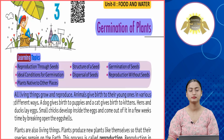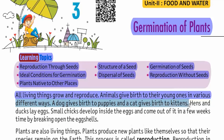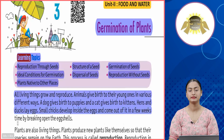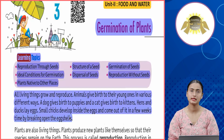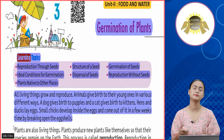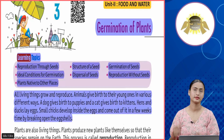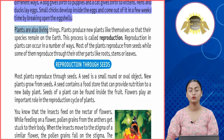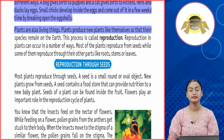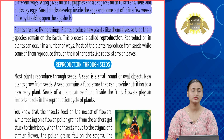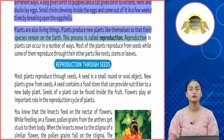All living things grow and reproduce. Animals give birth to young ones in various ways — a dog gives birth to puppies, a cat gives birth to kittens, and hens and ducks lay eggs. Small chicks develop inside the eggs and come out by breaking open the eggshells. Plants are also living things that produce new plants like themselves so that their species remain on the earth. This process is called reproduction.